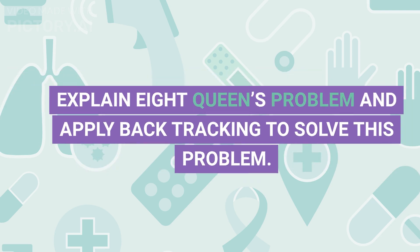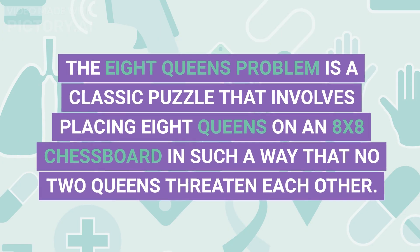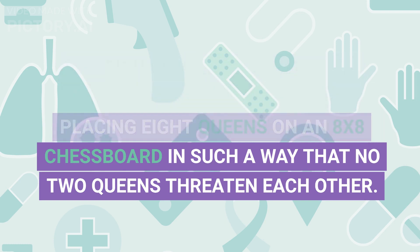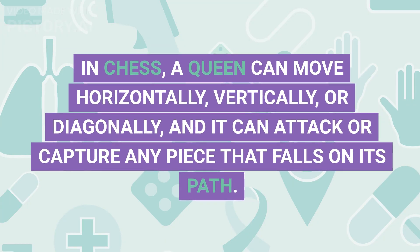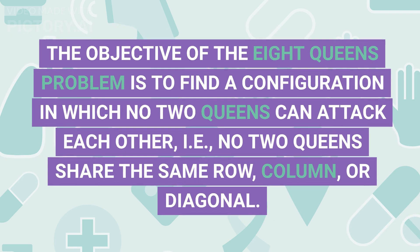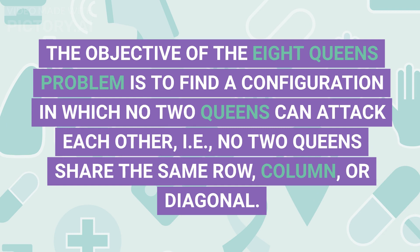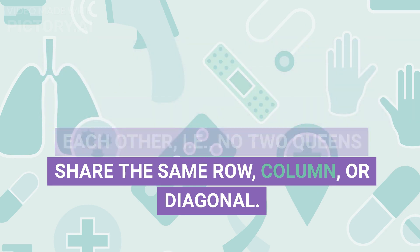Q4. Explain the 8 Queens Problem and apply backtracking to solve this problem. The 8 Queens Problem is a classic puzzle that involves placing 8 queens on an 8x8 chessboard such that no two queens threaten each other. In chess, a queen can move horizontally, vertically, or diagonally, and can attack any piece on its path. The objective is to find a configuration in which no two queens share the same row, column, or diagonal.